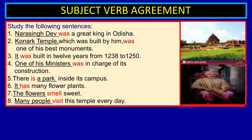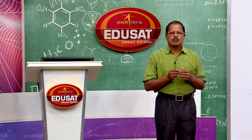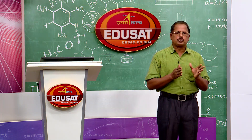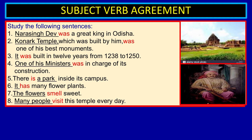It has many flower plants — 'it' is a singular pronoun, so we use 'has,' not 'have.' For 'the flowers smell sweet' — 'flowers' is the plural form of the noun, and 'smell' is the plural form of the verb that agrees with it. Note that 'this flower smells' uses the singular. Many people visit this temple every day — 'people' is plural, so we use 'visit,' not 'visits.' This is what we call subject-verb agreement.